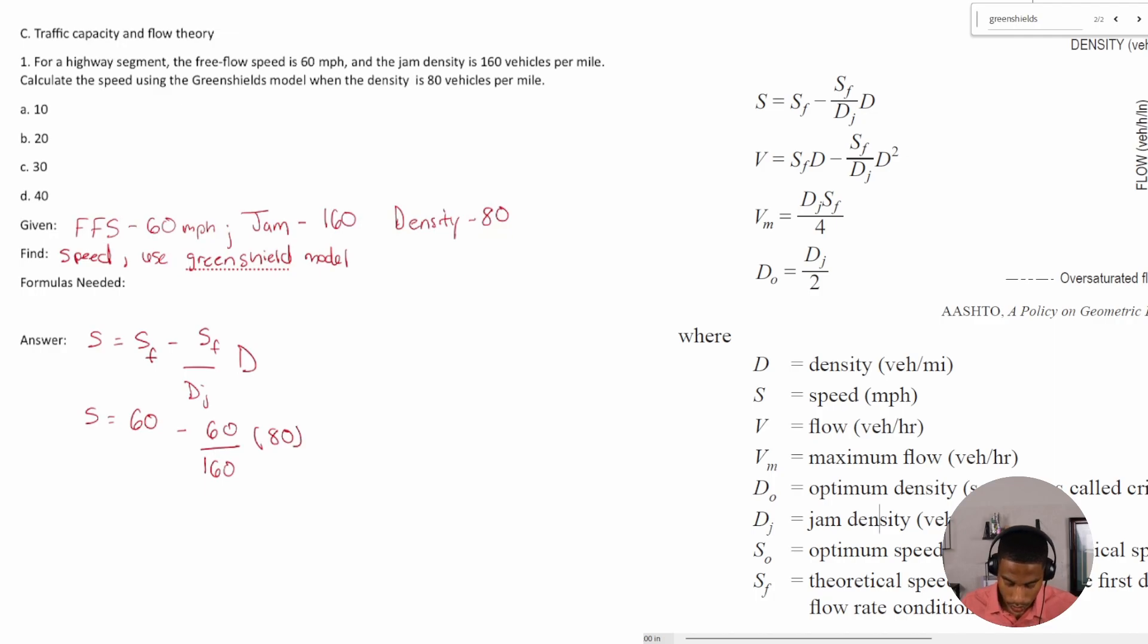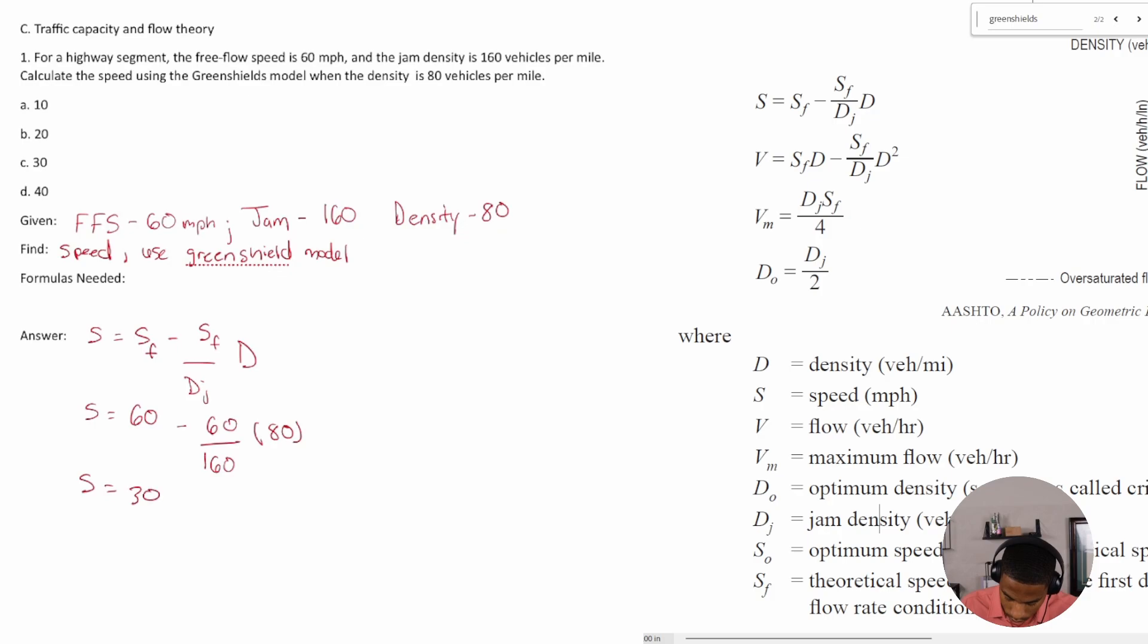All right, so once you go through that, you should get S to equal 30 miles per hour, or C.